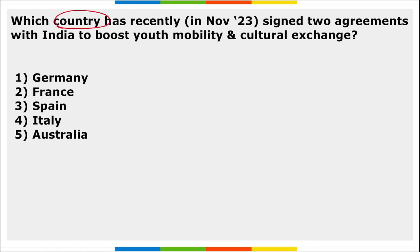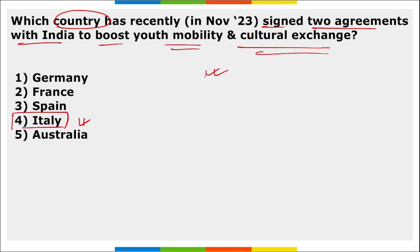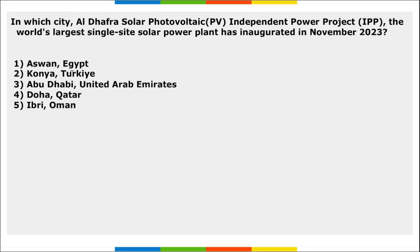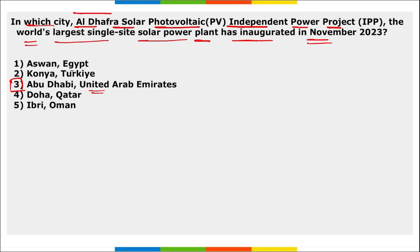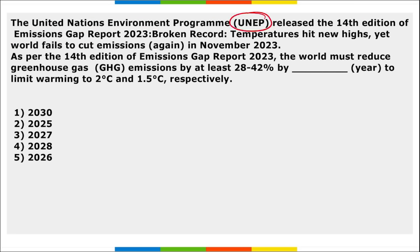Italy recently signed two agreements with India to boost youth mobility and cultural exchange. In Abu Dhabi, UAE, the Al Dhafra Solar Photovoltaic Independent Power Project — the world's largest single-site solar power plant — was inaugurated.